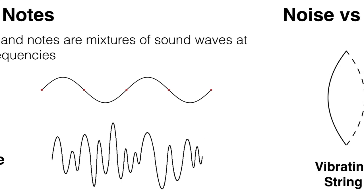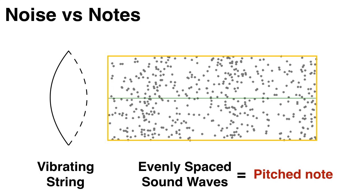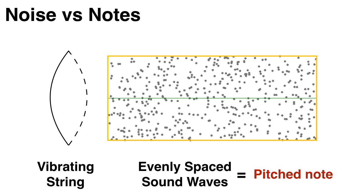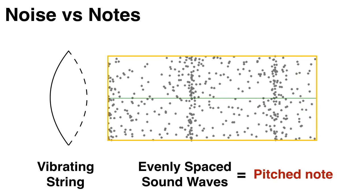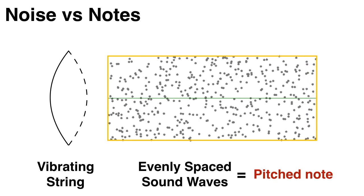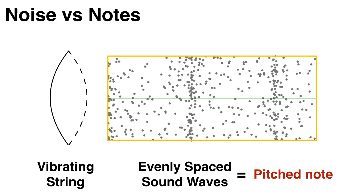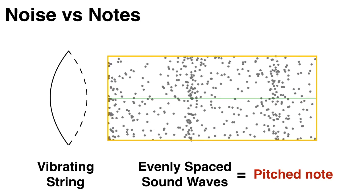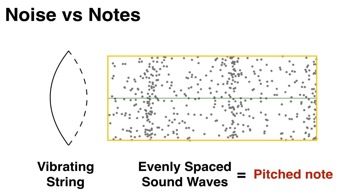If an object moves it causes a disturbance in the surrounding air which ripples out as sound waves. If the object vibrates with a fast and repeating pattern like a string, then the sound waves will be evenly spaced and regular. That is, air particles are squeezed together into evenly spaced waves. These evenly spaced regular sound waves are heard as notes with distinct pitches.